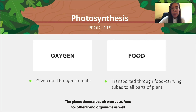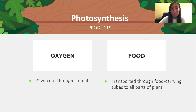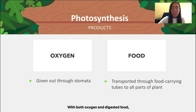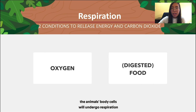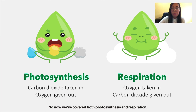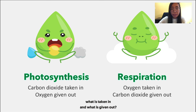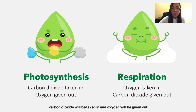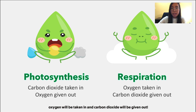Plants themselves also serve as food for living organisms, allowing them to grow and reproduce and continue their own kind. With oxygen and digested food, animal body cells undergo respiration to release energy and carbon dioxide. For photosynthesis, carbon dioxide is taken in and oxygen is given out. For respiration, oxygen is taken in and carbon dioxide is given out.